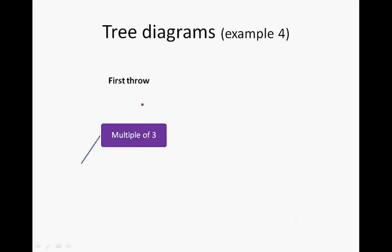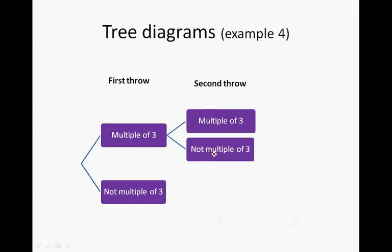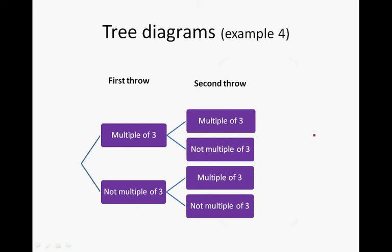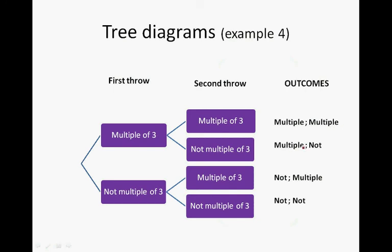In the first throw, we can either get a multiple of 3 or not a multiple of 3. In the second throw, we can again either get a multiple of 3 or not a multiple of 3. So the four outcomes are: multiple-multiple, multiple-not multiple, not multiple-multiple, or not-not. The not-multiples of 3 on a die are 1, 2, 4, and 5.